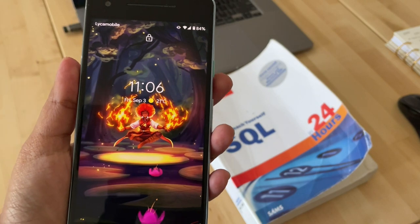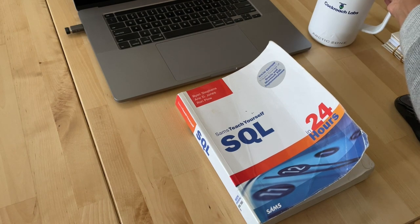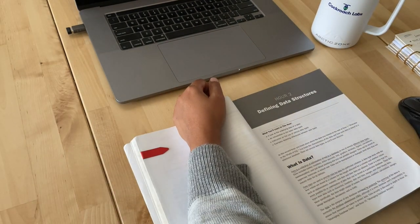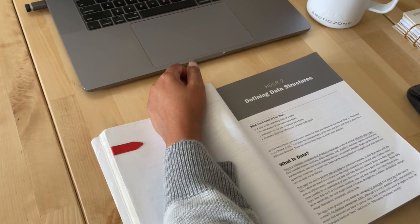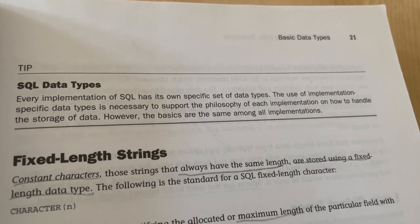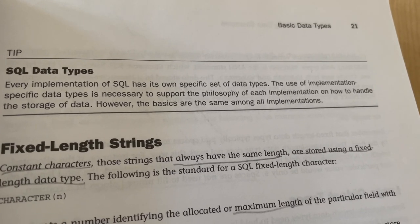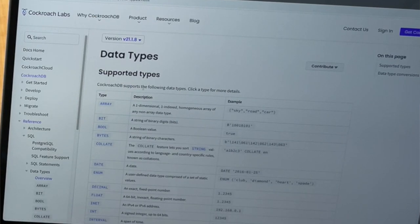On to hour two — it's 11:06. Just finished hour two. It was a pretty short chapter — an introduction to the data types. We learned about strings, numeric types, date and time, and boolean data types. They have a note saying every implementation of SQL has its own specific set of data types. The implementation I'm using is CockroachDB, so I spent some time going through the data types documentation for CockroachDB.